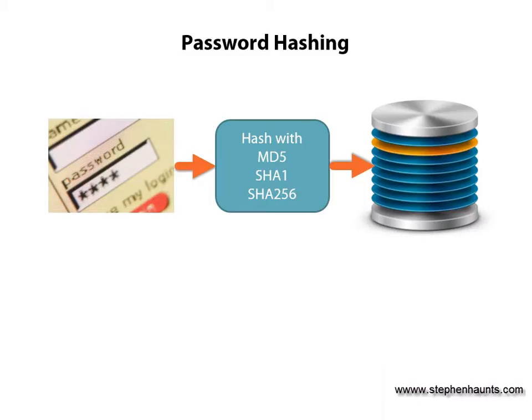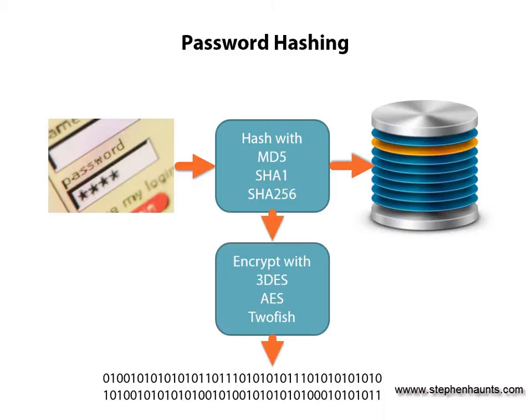Traditionally, passwords would be hashed using an algorithm like MD5, SHA1 or SHA256 and then stored in a database. These stored and hashed passwords would then be used as part of a password-based authentication system. These hashed passwords could also be used as a key to encrypt data using cryptography algorithms like TripleDes, AES and TwoFish. For years, hashing has been the accepted standard when it comes to using and storing passwords.